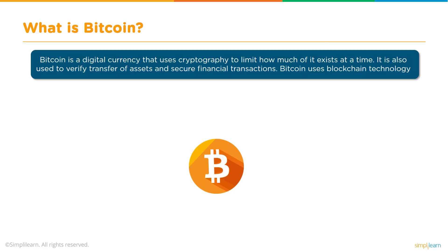What is Bitcoin? Bitcoin is a digital currency that uses cryptography to limit how much of it exists at a time. It is also used to verify transfer of assets and secure financial transactions. Bitcoin uses blockchain technology. There is a limit to the supply of Bitcoin — only 21 million are bound to be supplied in the network. As of today, around 16.5 to 17 million has already been mined and is available in the network for transactions.